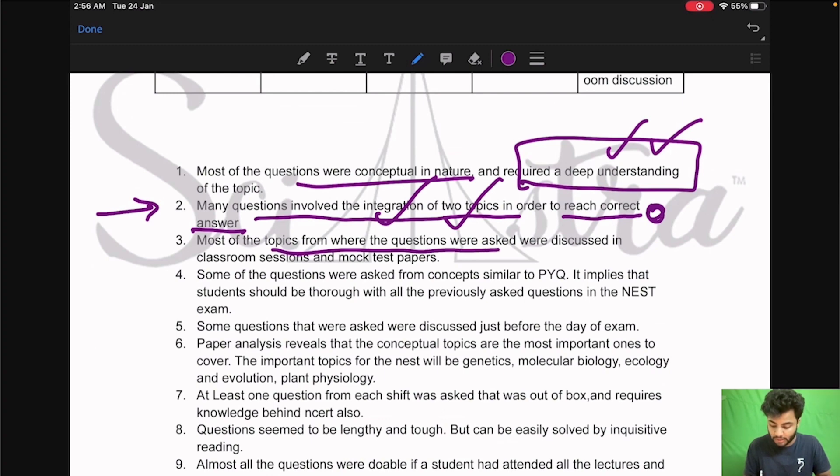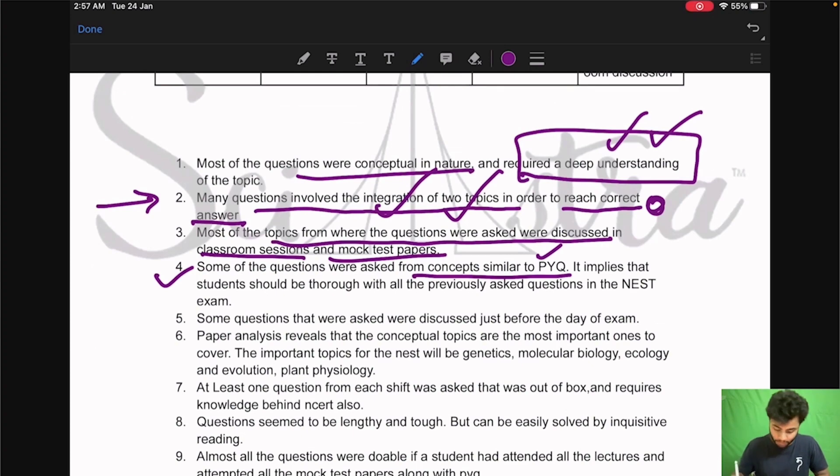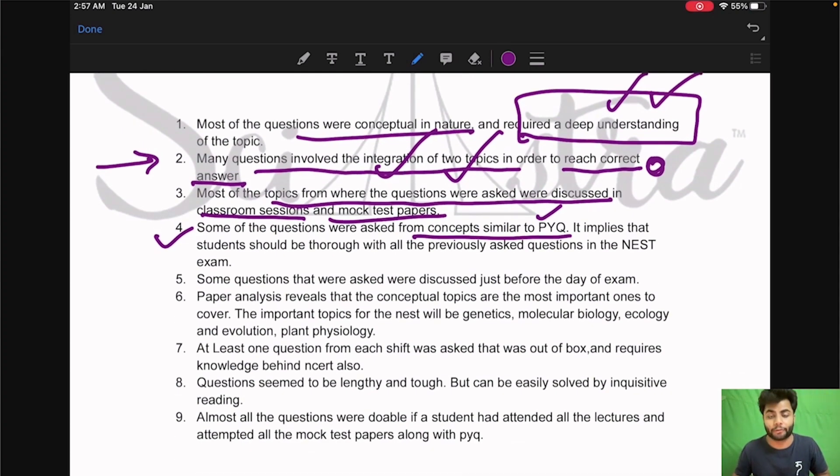Then most of the topics from where the questions were asked were discussed in the classroom sessions and mock test papers. Some of the questions were asked from similar concept like previous year papers. So some of the questions the concepts there are some always important chapters and topics that are always almost guaranteed will be coming in every year. There are always some topics for example in chemistry if I say I think chemical kinetics and coordination compound similarly carbonyl group in organic chemistry these are almost guaranteed topics they have to come. So the most many of the topics were also similar to previous year paper topic and this is one of the biggest reason why we tell you that you should do previous year papers.